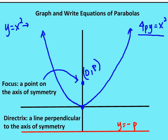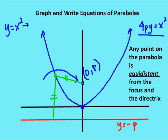Why do we even talk about the focus and the directrix? The parabola is a set of points that is equidistant from both the directrix and the focus. If you take any point on the parabola, the distance from that point to the directrix equals the distance from that point to the focus. That coordination is what defines the parabola, and that's why they're important.